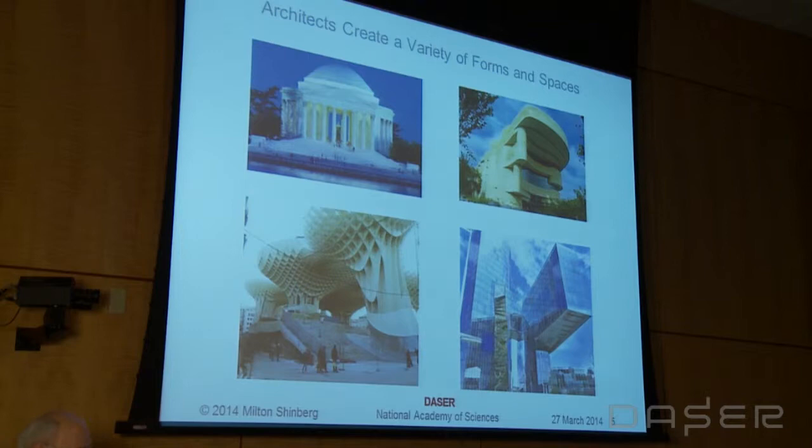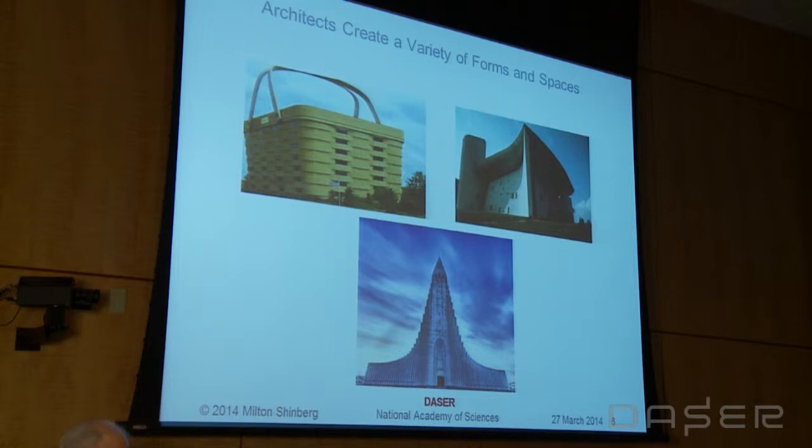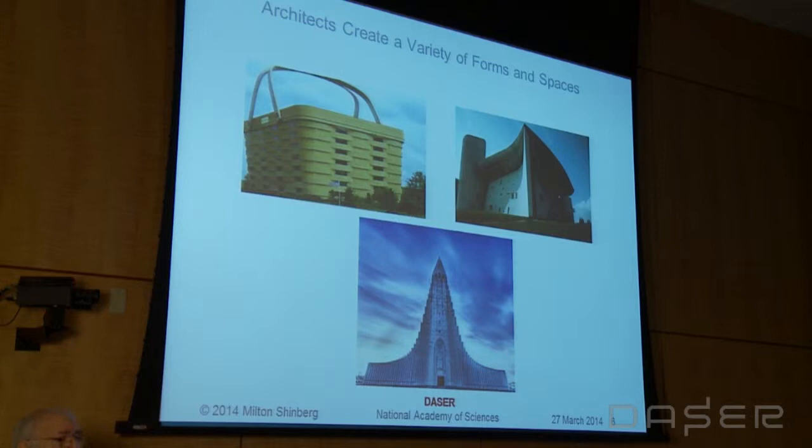Sometimes things are a little literal. I don't know if these folks manufacture baskets or not, but they might. Corbusier's Chapel Ronchamp on the upper right has been thought to be his conception of a nun's hat — he would never say so. The one on the bottom is literally a church that points to heaven. So we can think about things in terms of image, in terms of form, looking down and coming up with plan ideas.